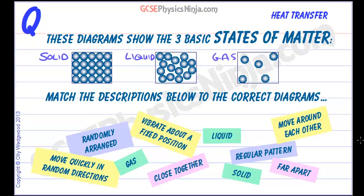And here are some keywords and descriptions. So let's first of all just number these up so we can easily add the descriptions. One, two, three. From these three, which ones can move quickly in random directions?